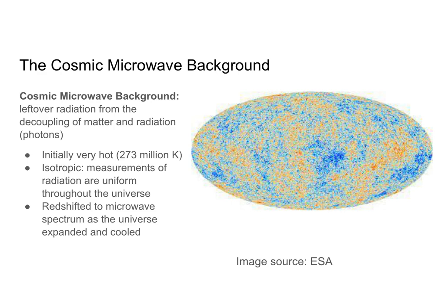That radiation, which was initially very, very hot, should have redshifted to the microwave spectrum as the universe expanded and cooled. And that is exactly what Penzias and Wilson found. Rather than hot visible light or even hotter UV radiation, they found microwave radiation that was extremely cold, just as the Big Bang model predicted.